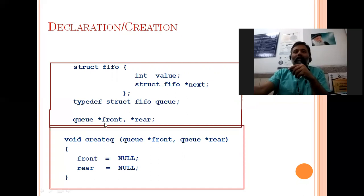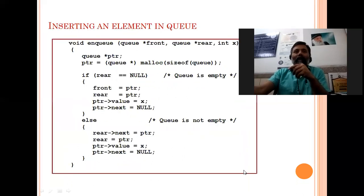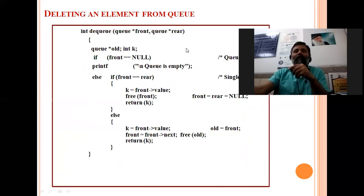For creation, front and rear both will be initialized to null. I have already discussed enqueue. Today I am going to discuss dequeue.